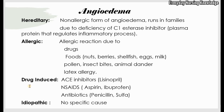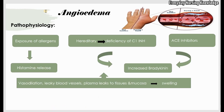The third type is drug-induced angioedema. ACE inhibitors are a common cause — these are antihypertensive medicines that end in '-pril', for example lisinopril. Other medicines that can cause angioedema include non-steroidal anti-inflammatory drugs such as aspirin and ibuprofen, and certain antibiotics such as penicillin and sulfa drugs. The fourth type is idiopathic, meaning no specific cause is identified.